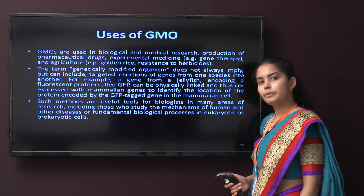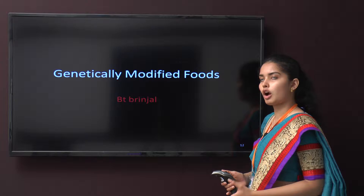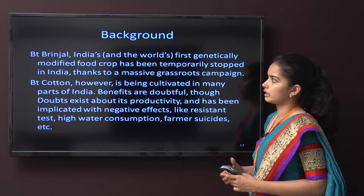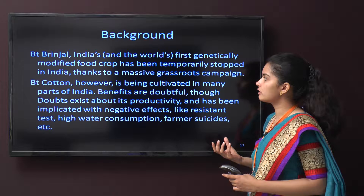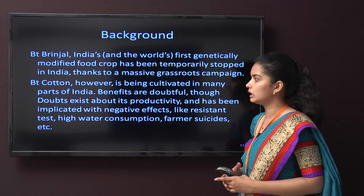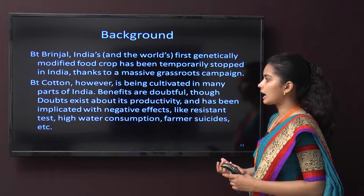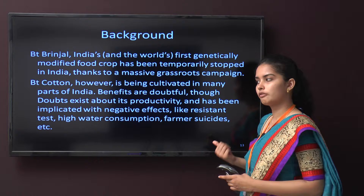Now, looking at genetically modified food — first, BT Brinjal. BT Brinjal was India's and the world's first genetically modified food crop, but it has been temporarily stopped in India due to a massive grassroots campaign. BT Cotton, however, is being cultivated in many parts of India. Its benefits are doubtful, with concerns about productivity, increased water consumption, and farmer suicides.